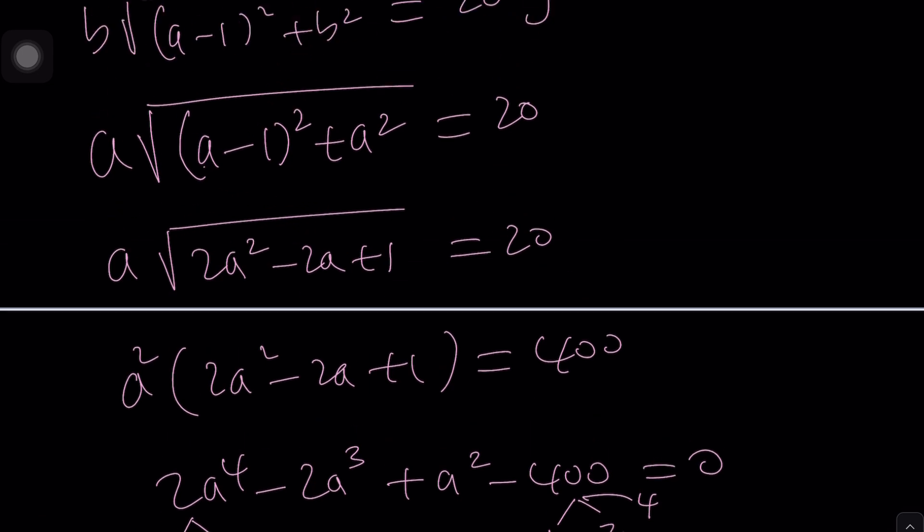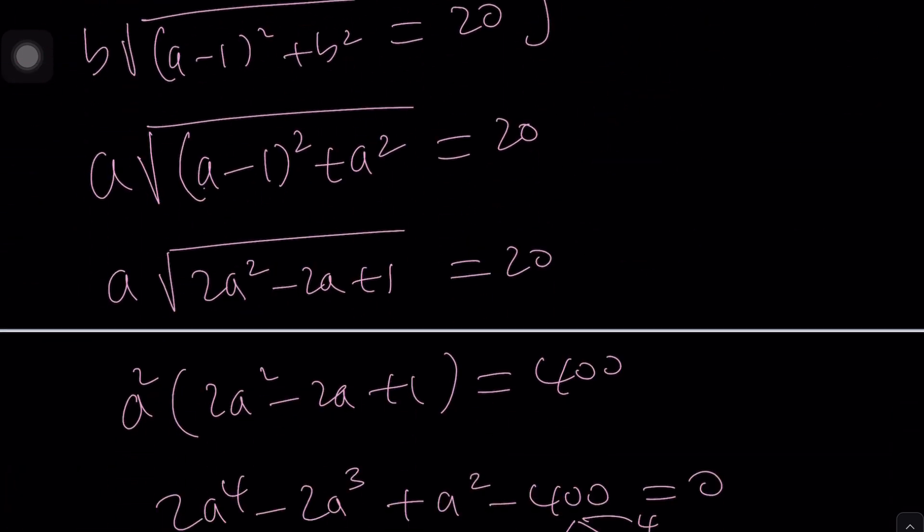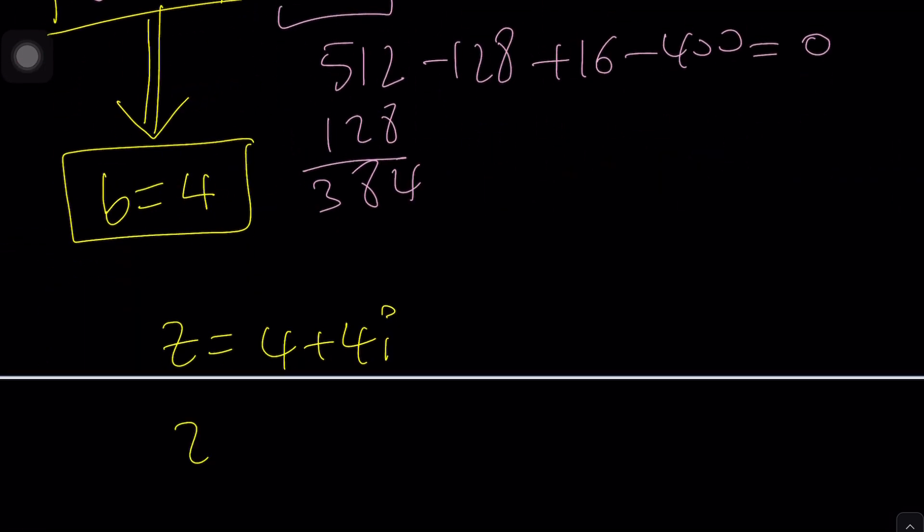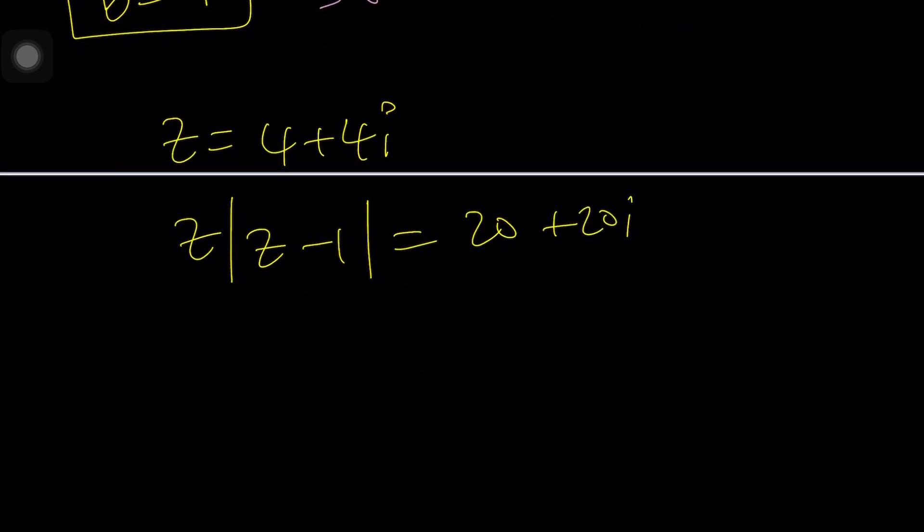Let's find out and we can take a different look at this problem and rewrite the original equation z|z-1| = 20 + 20i. Think about it this way. Absolute value of z minus one needs to divide this and looks like we can factor out a 20 and this can be written as one plus i.